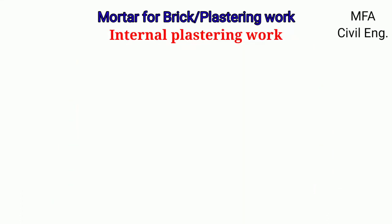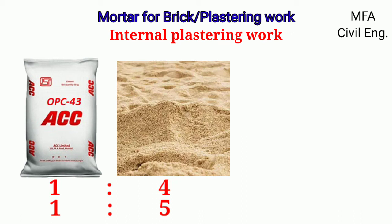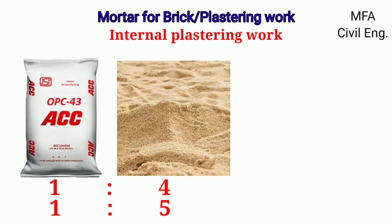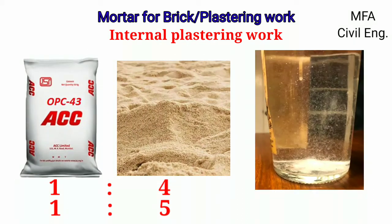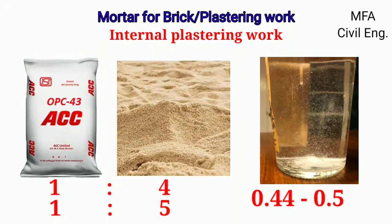For internal plastering work, the proportion of cement to sand in the mortar varies from 1:4 to 1:5. For the proportion 1:4, that means one part of cement and four parts of sand. The proportion of water in the mortar varies from 0.44 to 0.5 times the weight of the cement.